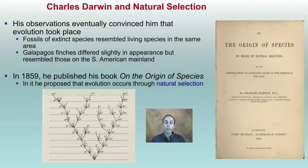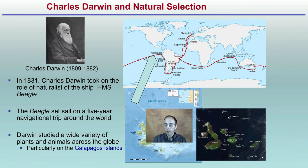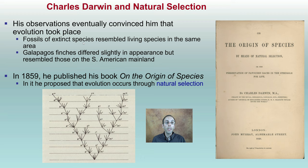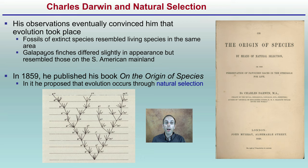His observations convinced him that evolution took place. Fossils of extinct species resembled living species in the same area. The Galapagos finches differed slightly in their appearance but resembled those on the South American mainland, suggesting they may have migrated or traveled from there. In 1859, he published his book The Origin of Species, in which he proposed that evolution occurs through the process of natural selection.